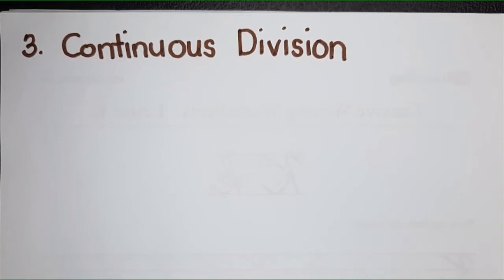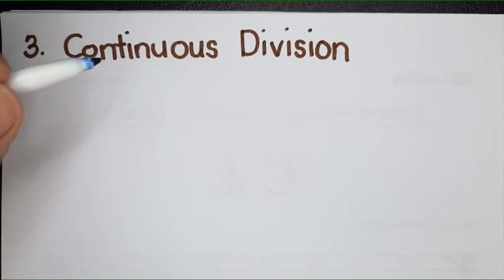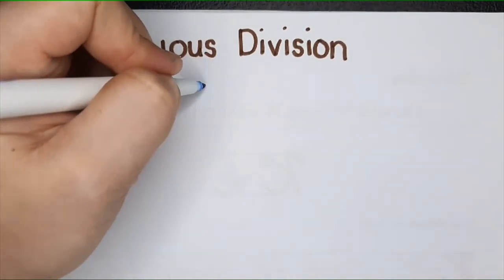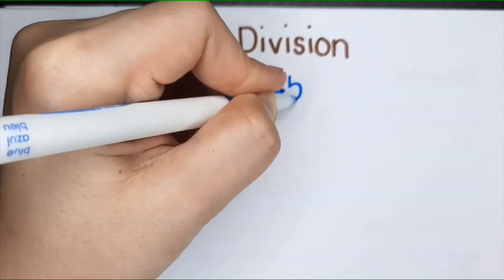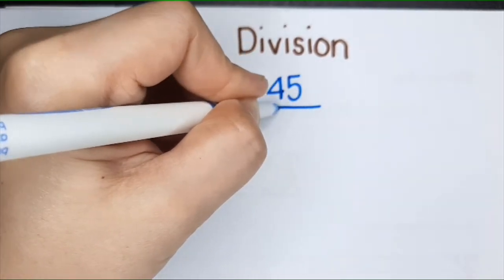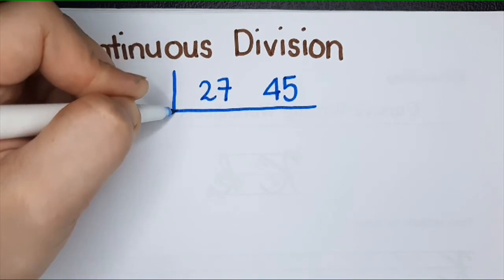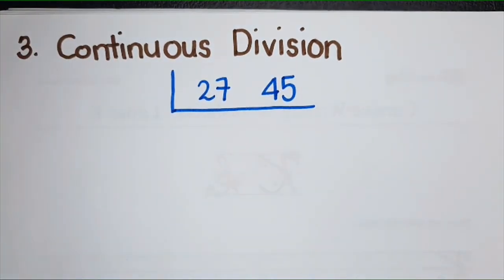Let's find the GCF of 27 and 45 using continuous division. Let's do it. Let me write 27 here and 45.